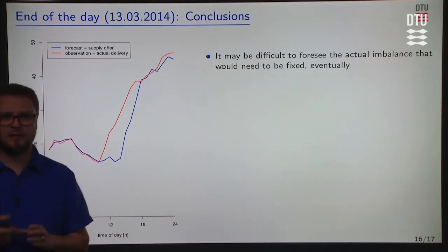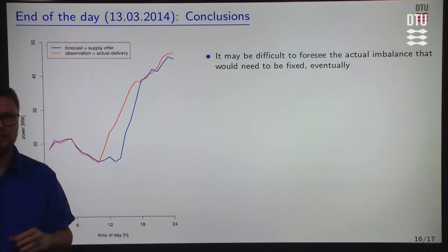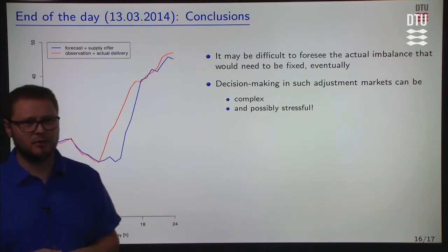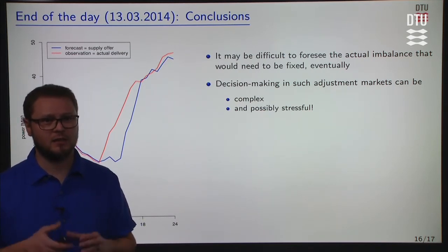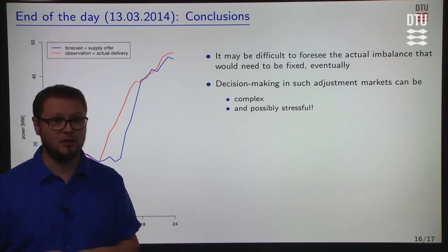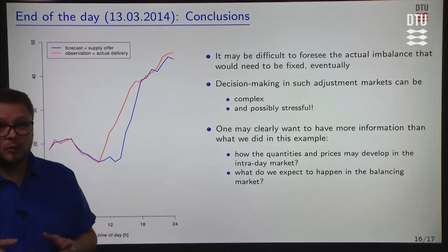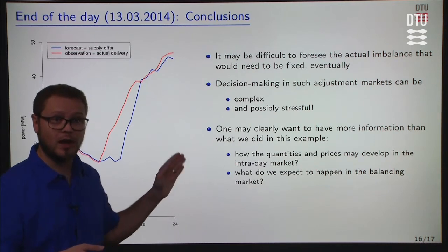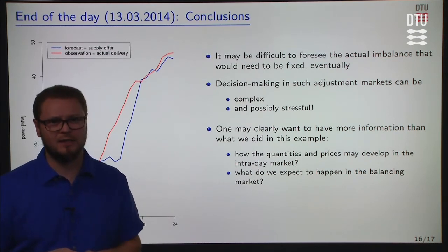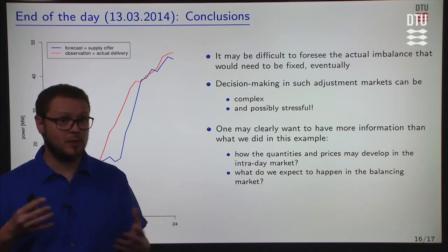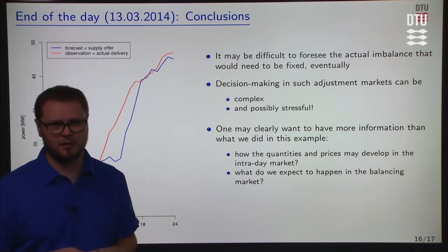Conclusions. By the end of the day, it may be difficult to foresee the actual imbalance or deviation from your original schedule that would need to be fixed. Decision-making processes in this environment of adjustment markets can be quite complex and possibly stressful. It is possible to design offering strategies based on updates and information from the outside world and from the Elbas screen, but it's quite difficult. You may clearly want to use more information than just your own forecast, observation of wind power, and the offers on your screen — such as prices in neighboring countries, and what you expect the balancing market to offer in terms of prices and volume, so you may decide: do I want to buy or sell now, or do I just wait for the balancing market?